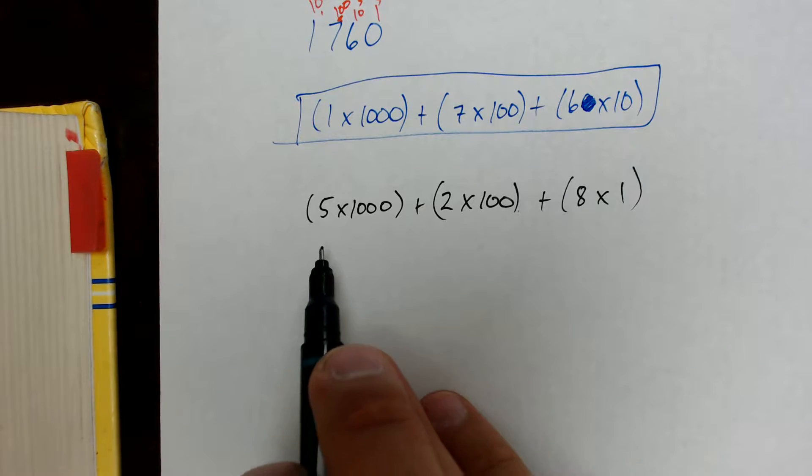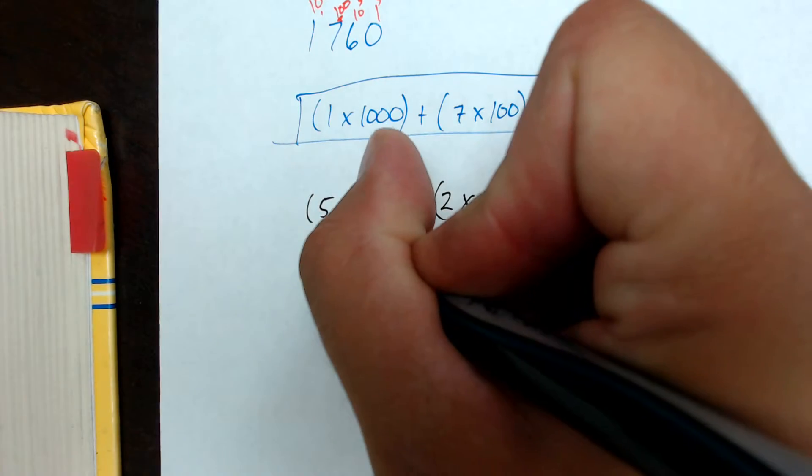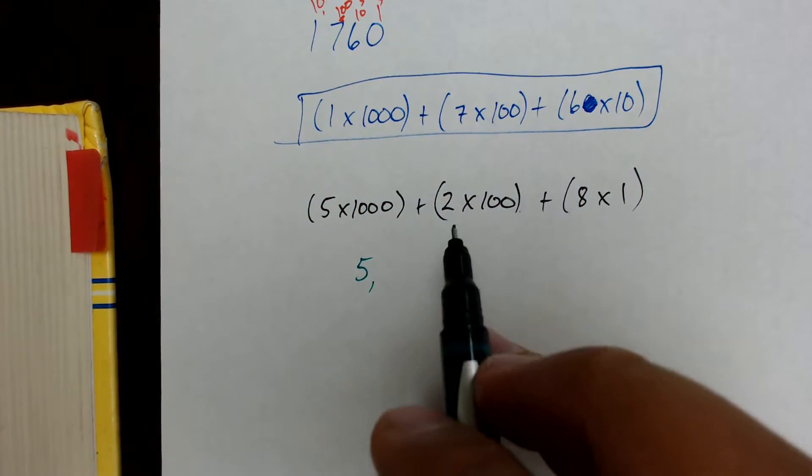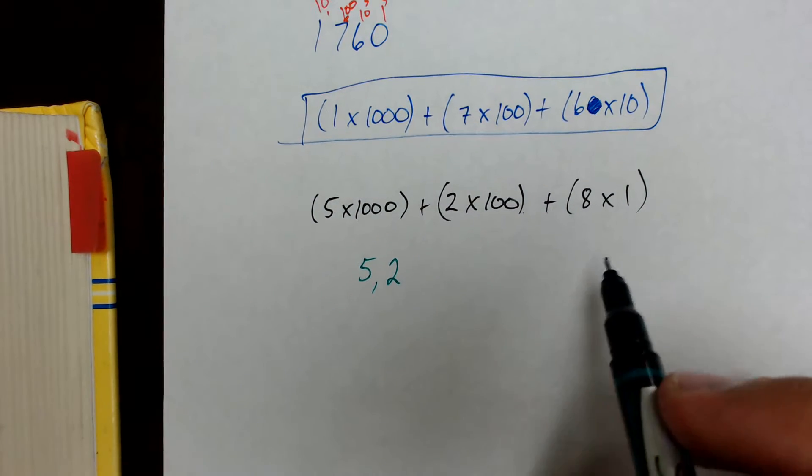So this is a number in expanded notation. We need to convert it to standard notation. We're just going to start writing our number from the left to the right, noting our place value. We've got 5 times 1,000, so that's going to be 5 and then comma because it's 1,000. Next, we have 2 in the hundreds place. And then we have 8 in the ones place.